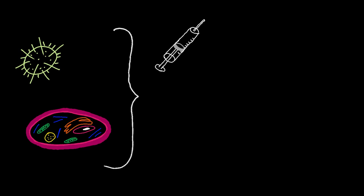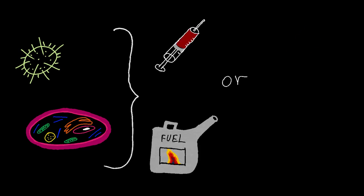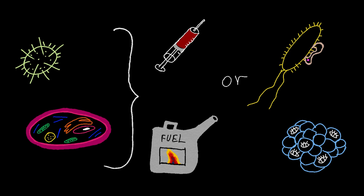In practice, synthetic biology simply changes organisms so that they will produce a substance, such as a medicine or fuel, or gain a new ability like sensing something in the environment.